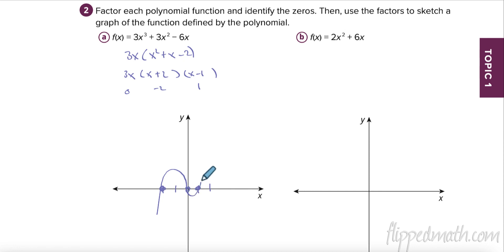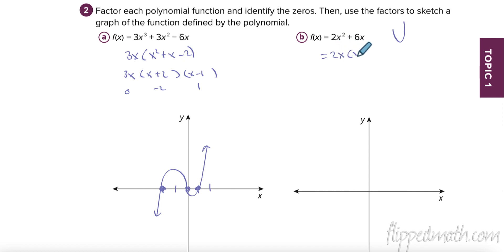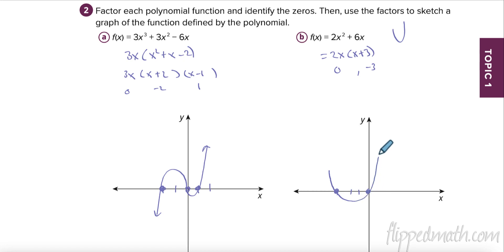It's a positive leading coefficient so it starts low and goes high. Now notice this next one is a quadratic - I can take a common factor of 2 and x out, leaving (x + 3). So I have a zero at 0 and a zero at -3. It's positive so it opens upward - just draw a quadratic shape through those points.